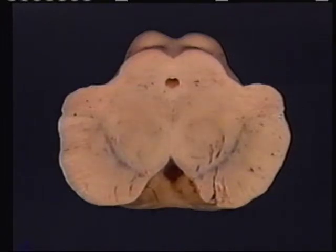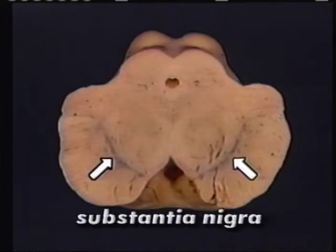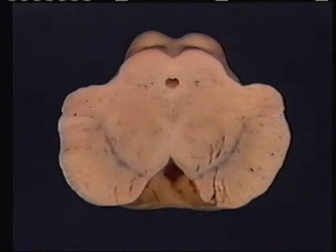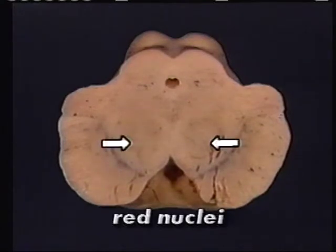The red nuclei and substantia nigra are not part of the reticular formation and can also be identified in this specimen. The substantia nigra are the largest nuclear masses in the midbrain. These nuclei, which affect muscle tone, contain granules of melanin pigment that give the substantia nigra a dark color. The red nuclei, important relay nuclei in several descending motor pathways, are situated between the cerebral aqueduct and the substantia nigra.